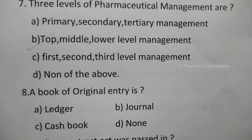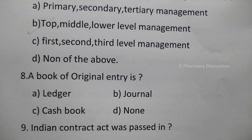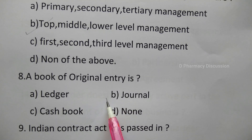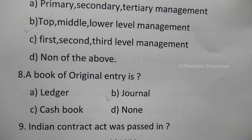Question 8: A book of original entry is called — option A: ledger, B: journal, C: cashbook, D: none. The correct answer is option B, journal. The ledger is a book containing all accounts to which entries are transferred from the book of original entry. The journal is the basic book of original entry. The cashbook is a book used to record all cash receipts and payments.